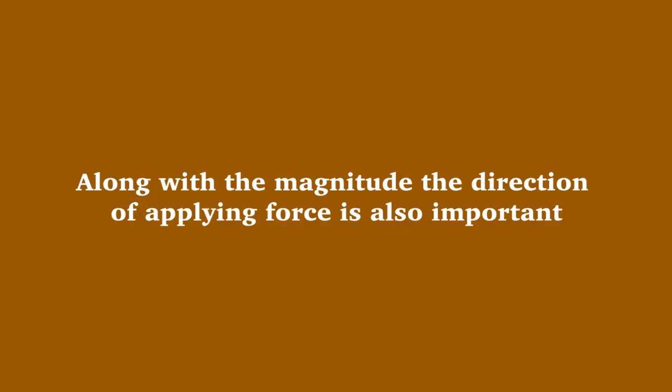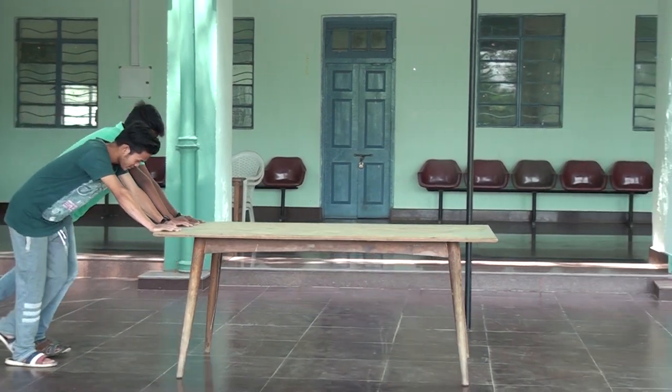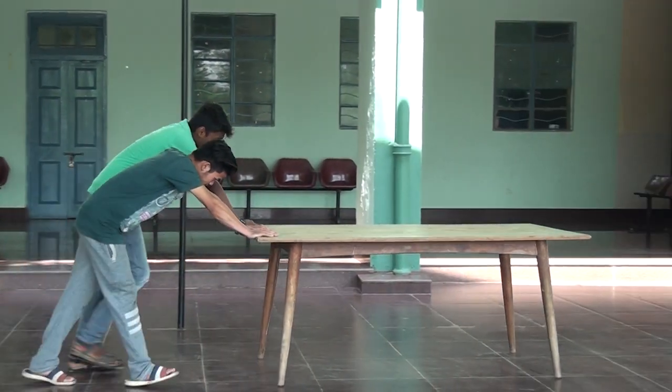Along with magnitude, the direction of applying force is also important. The object will move in the direction in which we are applying the force. Here, two students are applying force on the table in the same direction. At that time, the table will move faster. So we can say that when two or more forces are applied in the same direction, they add up: F equals F1 plus F2.